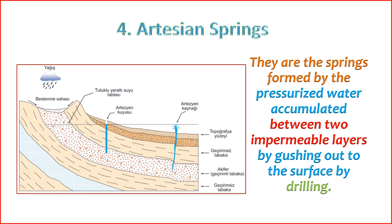4. Temperature and composition — the temperature and composition of water from artesian springs can vary but are often influenced by the geological layers the water passes through. It might be cooler or warmer than the average groundwater, and mineral content can be higher. 5. Artesian basin — large-scale occurrences of artesian springs are associated with artesian basins, where extensive aquifers are trapped between impermeable layers over a wide geographic area. 6. Human use — artesian springs have been historically valuable for human settlements, providing a natural source of water for drinking, agriculture, and other uses. These springs are important geological features, and their sustainable use is crucial for maintaining water resources in various regions.